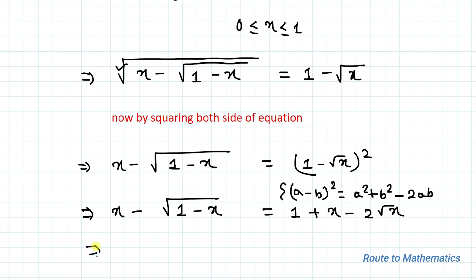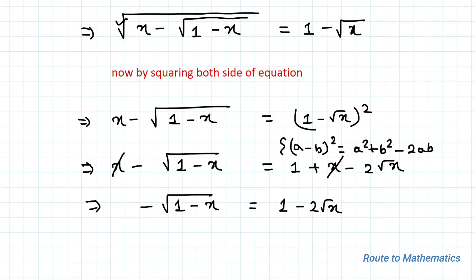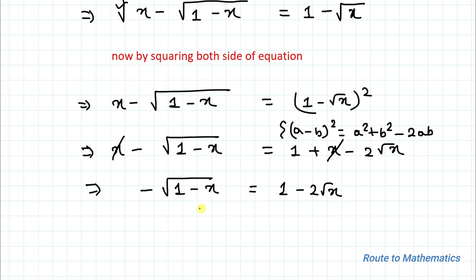Taking the positive x to the right hand side, this x and that x cancel out. Now we have −√(1 − x) = 1 − 2√x. Multiplying both sides by −1, we get √(1 − x) = 2√x − 1.